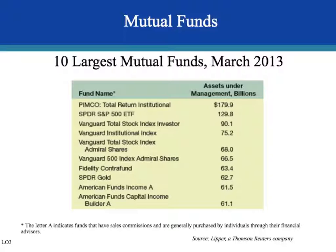The 10 largest mutual funds as of March 2013 include PIMCO with nearly $180 billion in assets, followed by the S&P and Vanguard funds, and so on.